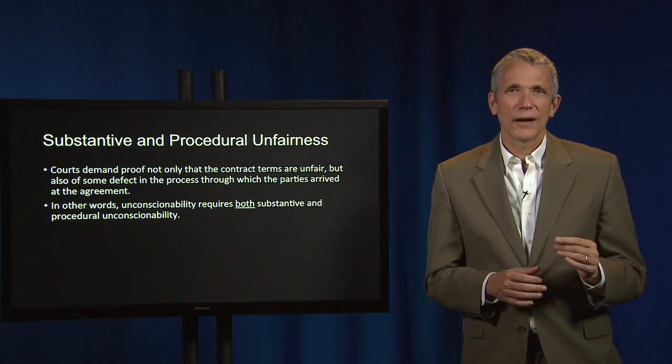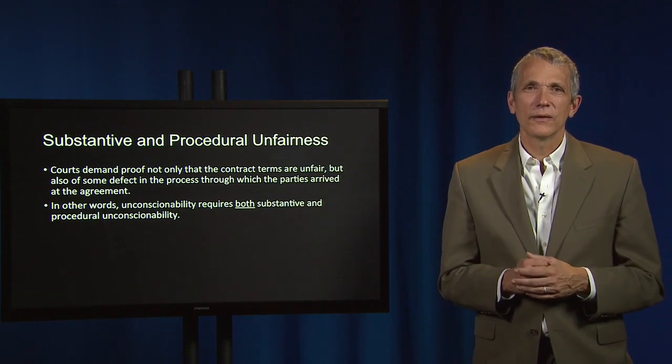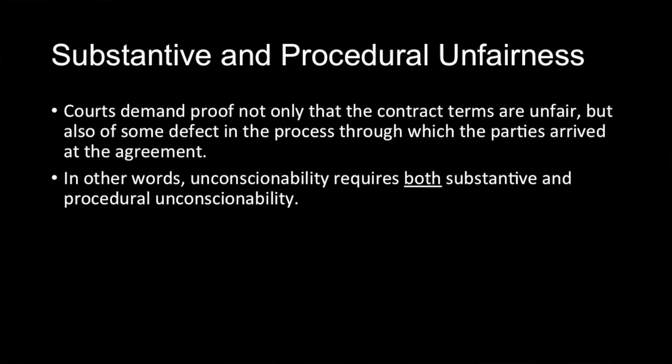While the consideration doctrine does not inquire into the adequacy of consideration, when courts decide unconscionability cases, they demand proof not only that the contract terms are substantively unfair, but they also require some procedural defect in the process through which the parties arrived at the agreement. In other words, although the unconscionability doctrine focuses on what the contract's terms are — this is substantive unconscionability — courts must also consider and find some degree of procedural unconscionability, some defect in the process of its formation.